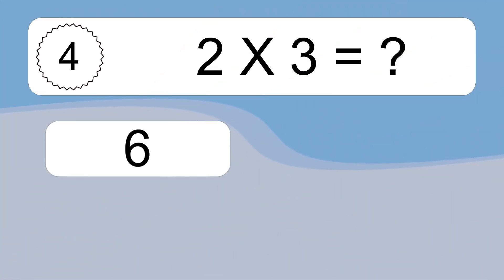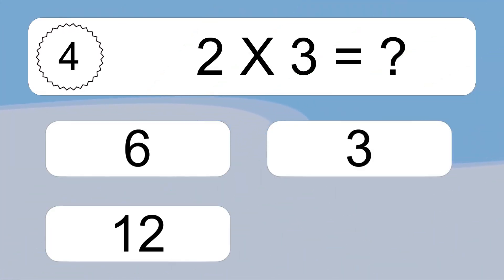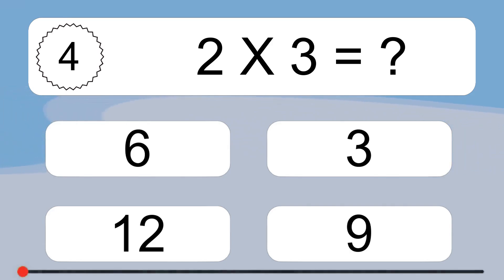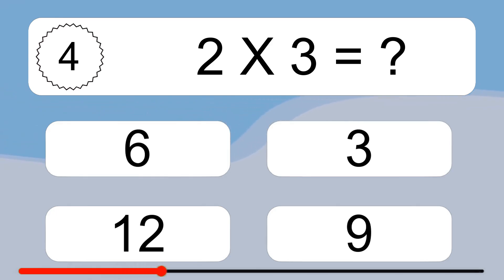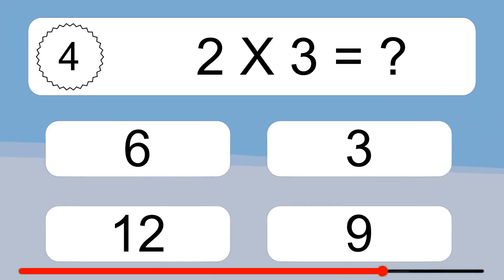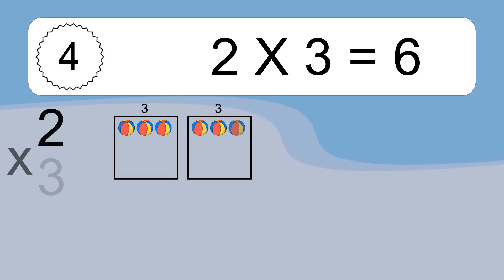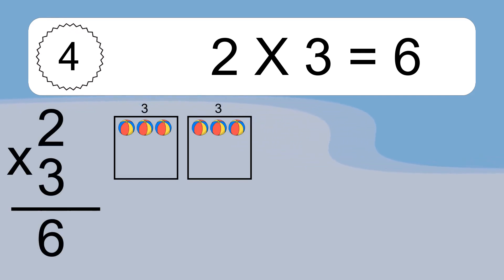2 times 3 equals what? 2 times 3 equals 6.